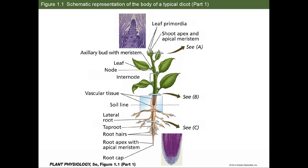A dicotyledonous plant is one which, after germination, develops two cotyledons, or two original leaves. We see the root zone at the bottom. All dicots, if grown from seed, develop a strong taproot from which lateral roots form. Moving up the stem, we see various nodes from which leaves are growing. At the very top, we have the meristem, where undifferentiated tissue is formed. Cells developing from the meristem at the top of the plant can go on to create any cell type — they are the stem cells of plants.